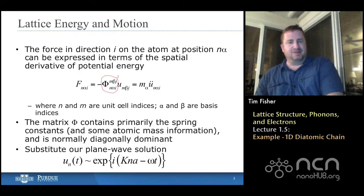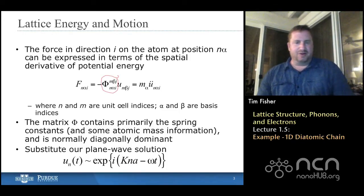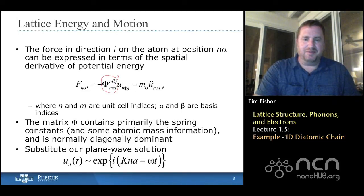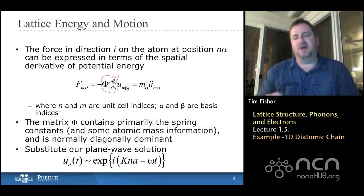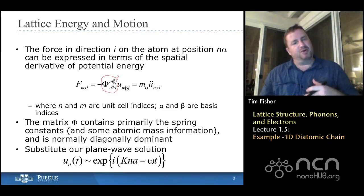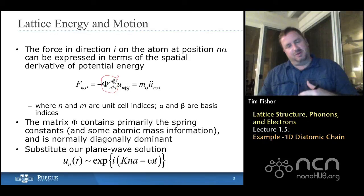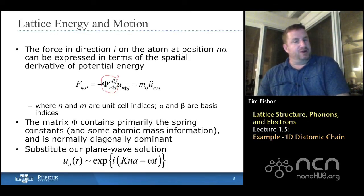This matrix phi contains the spring constants in some form. And there can be some atomic mass information that's embedded in it. And it's normally diagonally dominant because if we go down the diagonal, this is atom N alpha, right? And so we think that the atom M beta, if it's close to N alpha, will have a significant force constant or spring constant between itself and the N alpha atom. But as I get farther away from that atom, we think that that force constant will go away, will diminish down to zero. And in our case, we're only going to worry about nearest neighbor. So it's really only the two atoms on either side.